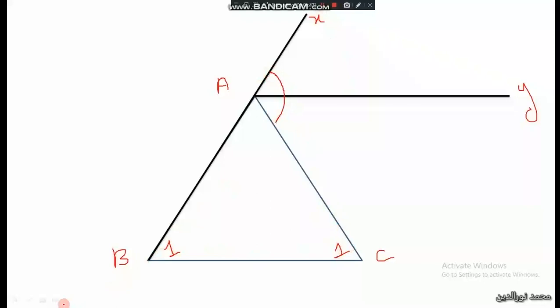So this angle we'll call one and this angle we also call one. This angle equals one plus one, equal to both of these angles. Now so you don't get confused with the ones, I'll call this one angle A and this one angle A, same name because they are equal.